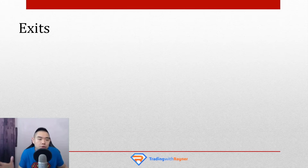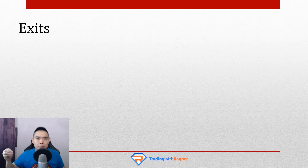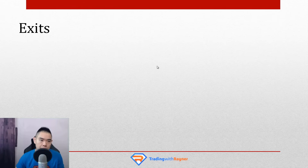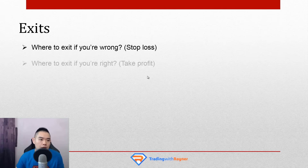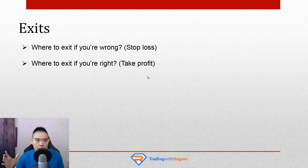In this section it's all about exits. When it comes to your exits there are two parts to it. First part is: where do you exit if you're wrong? This is also known as your stop loss. Number two: where do you exit if you're right? This is also known as your take profit. So let's study stop loss first.